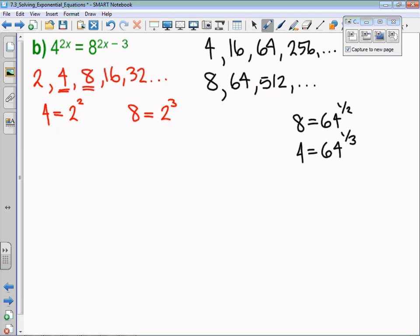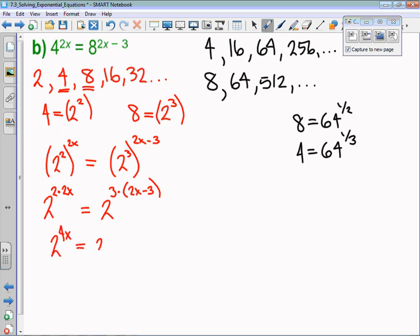We are going to take the number 4, replace it with 2 squared, and take the number 8, replace it with 2 cubed. That means I have 2 squared to the power of 2x equals 2 cubed to the power of 2x minus 3. We are going to multiply these exponents. This is 2 to the power of 2 times 2x equals 2 to the power of 3 times, in a bracket, 2x minus 3. It's very important that when we multiply that 3 onto that binomial 2x minus 3, that 3 distributes onto both of those terms.